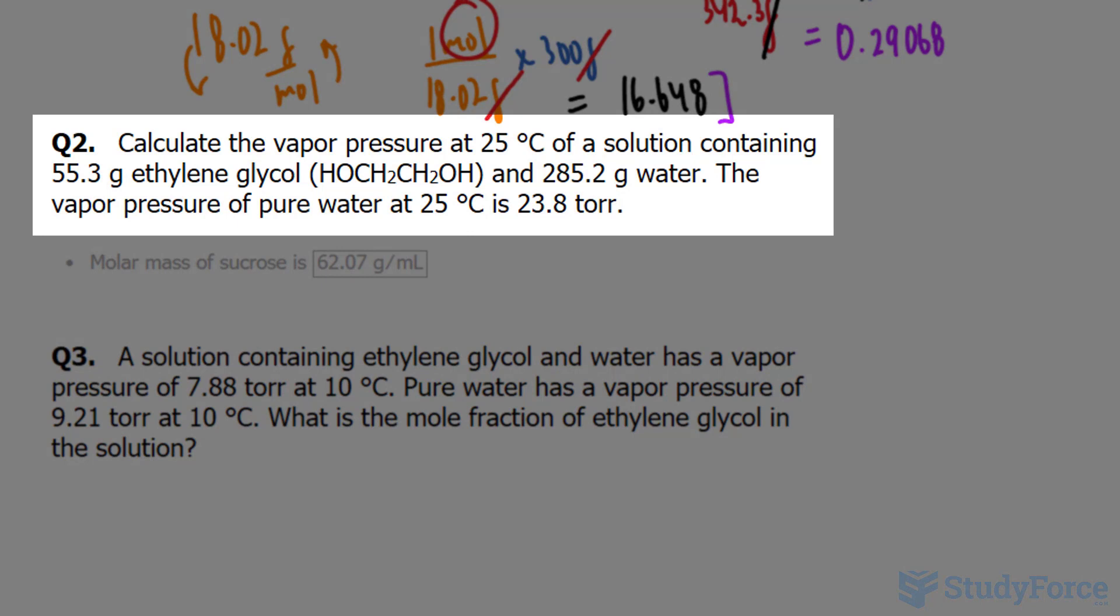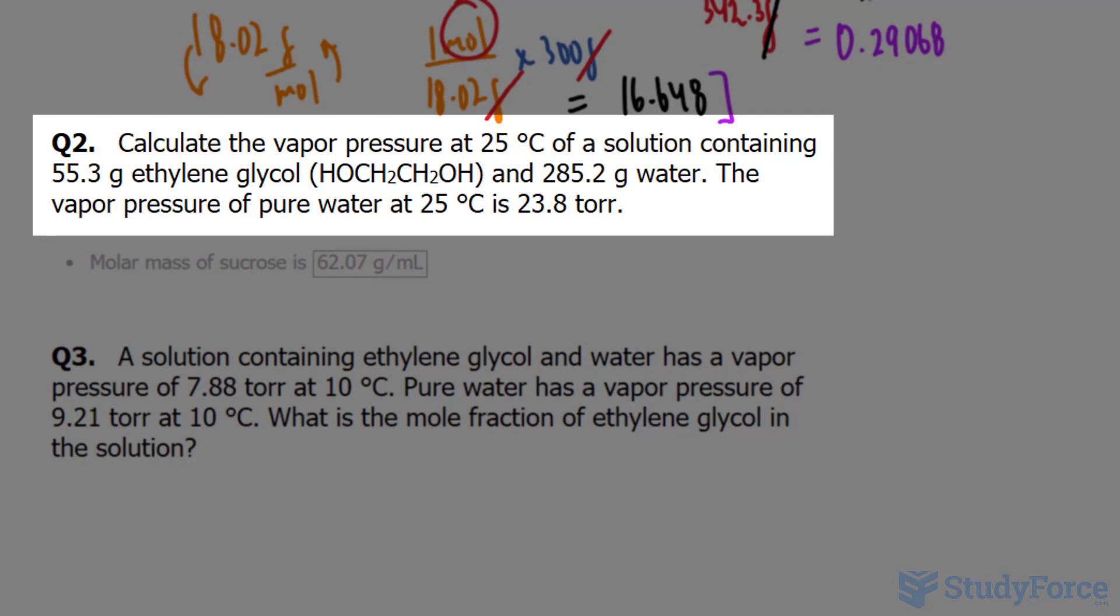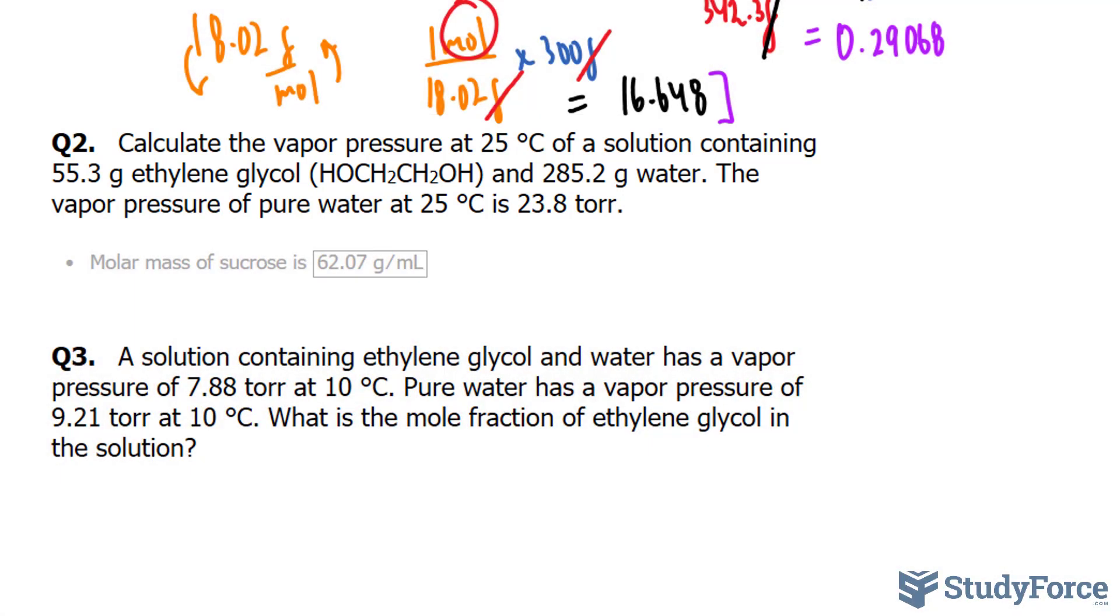The question reads: calculate the vapor pressure at 25 degrees Celsius of a solution containing 55.3 grams of ethylene glycol and 285.2 grams of water. The vapor pressure of pure water, just as in question number one, was 23.8 torr at 25 degrees Celsius.